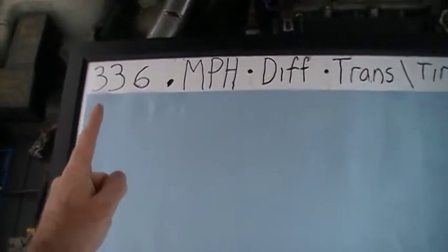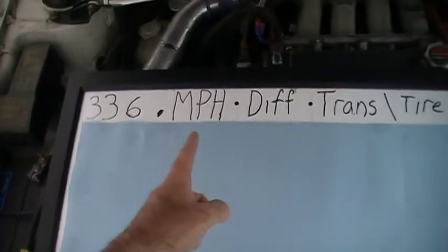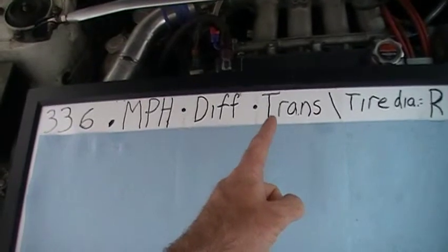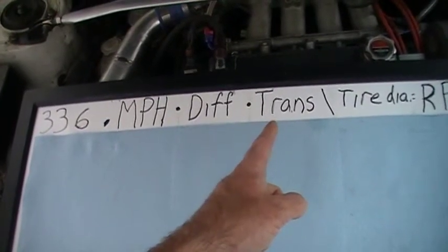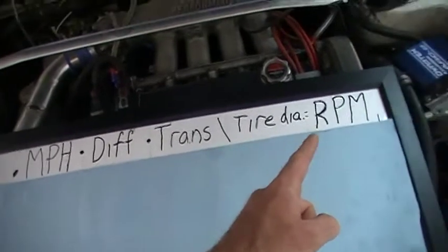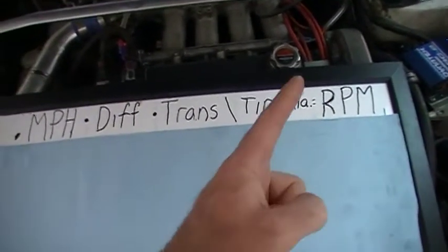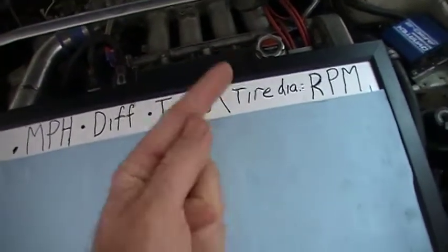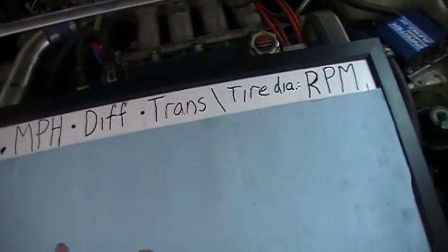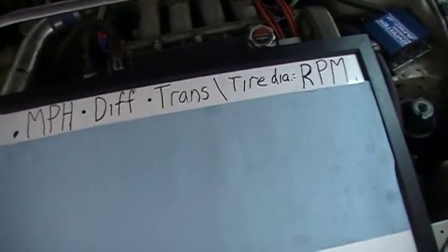The formula is: 336 — that's always the same — multiplied by miles per hour, multiplied by your diff ratio, multiplied by your trans ratio (so what gear you're in), divided by tire diameter, equals RPM. If you're a stick shift, this is exact. If you're auto, it's going to be exact when you're in lockup. But if you're calculating a quarter mile trap speed, you need to add a bit for torque converter slip and keep that in mind.